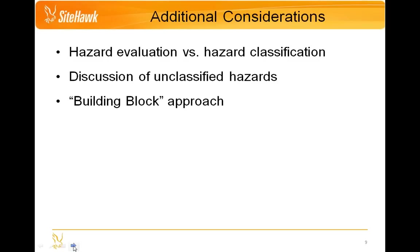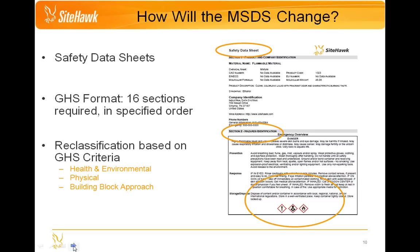Finally, the building block approach: GHS allows countries and agencies to adopt portions of GHS which best fit within the current regulatory guidelines, meaning those classifications may not be 100% harmonized across agencies and countries. Now let's talk about how specifically the MSDS is going to change. First and foremost, the name is going to change — you'll no longer refer to them as material safety data sheets, but now they will be just safety data sheets. All those yellow MSDS binders will become SDS binders or SDS systems.